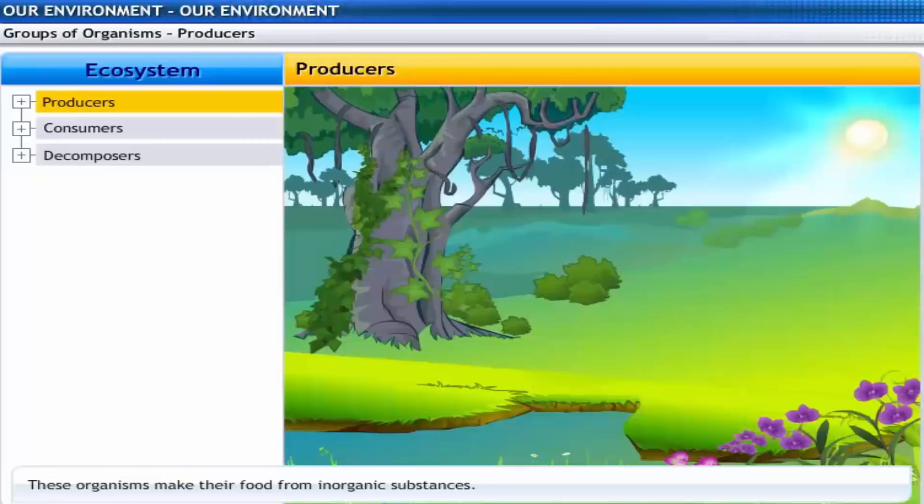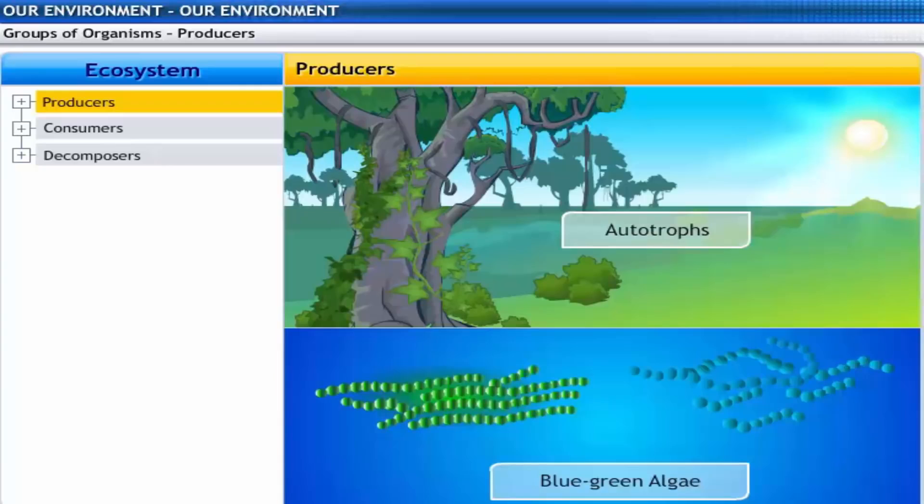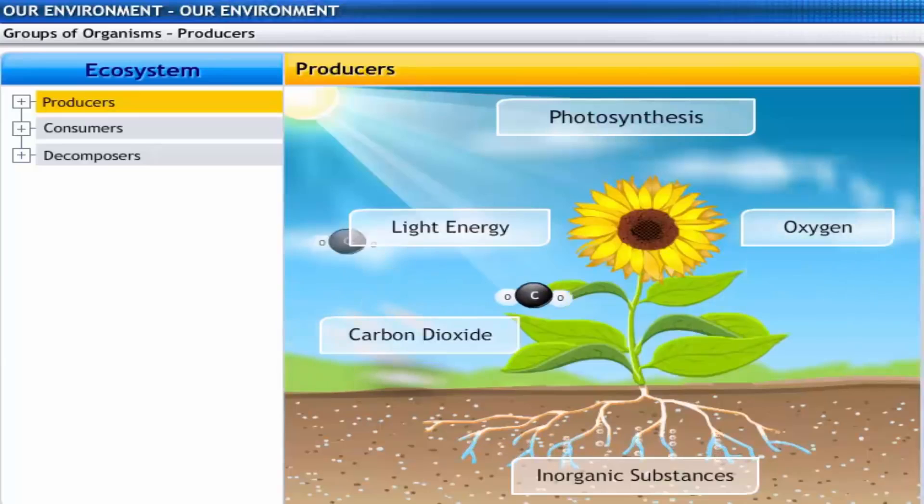Producers are organisms that produce their own food without the help of any other organisms. They make their food from inorganic substances. They are also known as autotrophs. All green plants and certain blue-green algae which can produce food by photosynthesis.